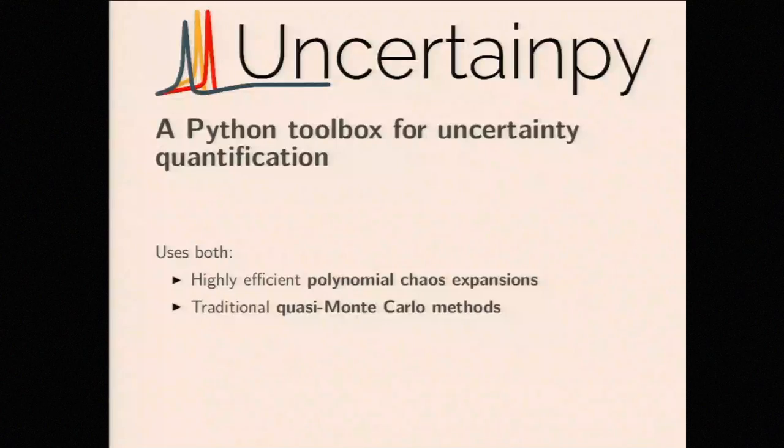It is therefore much easier to determine how much we can trust our model result. This is where UncertainPy comes in — a Python toolbox for performing these uncertainty quantifications. It uses the very efficient polynomial chaos expansions or the more traditional, slower but more robust quasi-Monte Carlo methods. I'm not going to go into details on how this is done; instead I'll show what type of results we get from an uncertainty quantification.